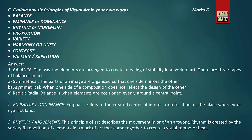In question number seven C, you have to explain any six principles of visual arts in your own words. The principles of visual arts are balance, emphasis or dominance, rhythm or movement, proportion, variety, harmony or unity, contrast, and pattern or repetition.